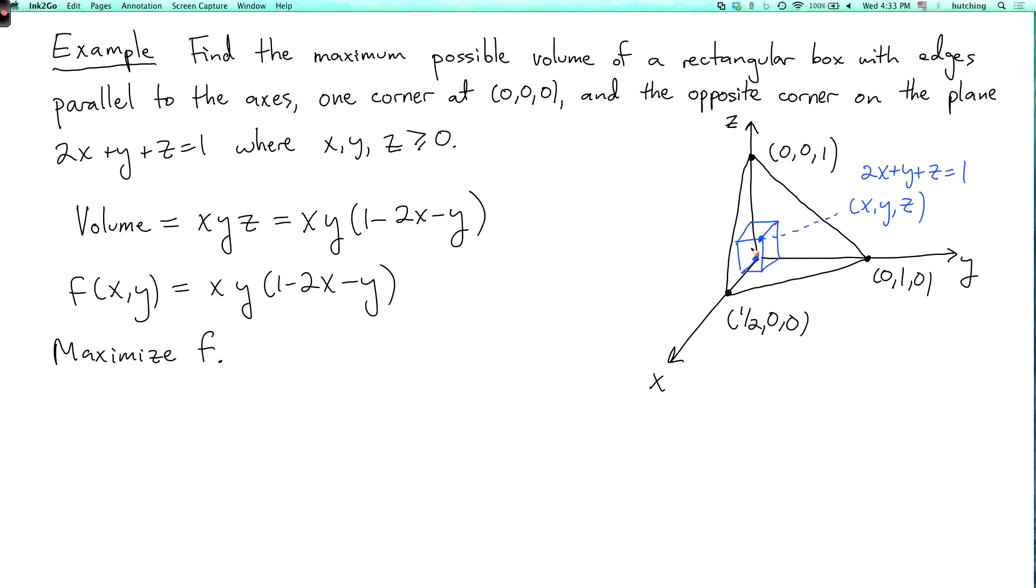So what we have to do is take the shadow of this triangle in the x, y plane. And the shadow looks like this. So here's the point (1/2, 0), and here's the point (0, 1). The shadow of the triangle is this region in the plane.